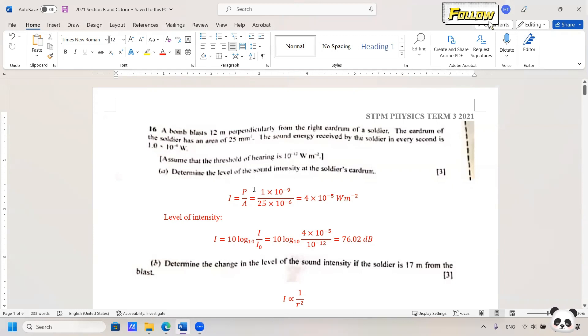So the first question is to determine the level of the sound intensity at the soldier's eardrum. We have the formula that I is equal to P over A, and the power here is referred to the sound energy received by the soldier, which is at a distance of 12 meters. We are already given the area of 25 mm², so just apply the formula power over area, put in the values, don't forget to do the unit conversions, and you can obtain the intensity is 4 times 10 to the power negative 5 watt per meter squared.